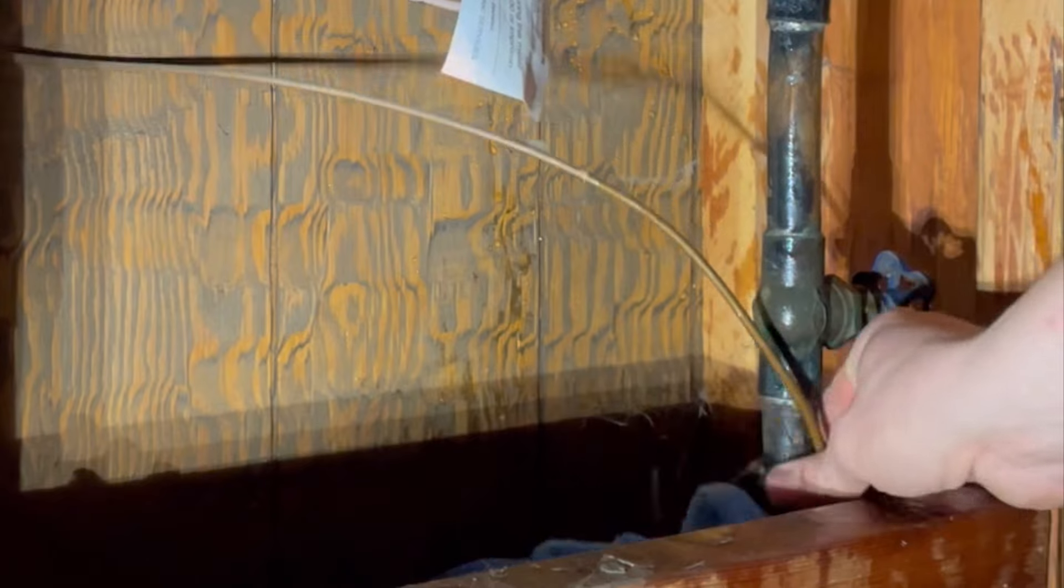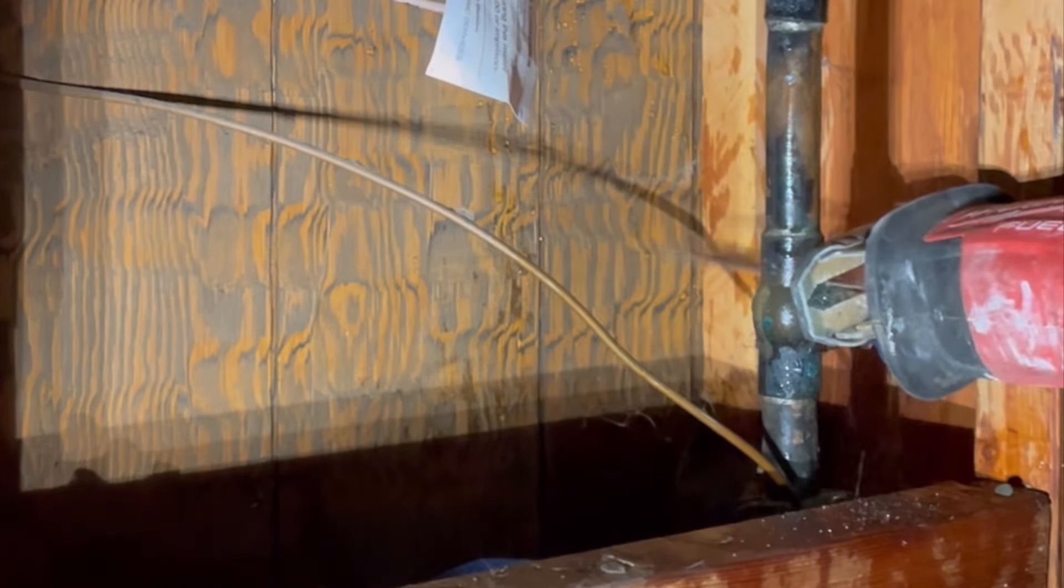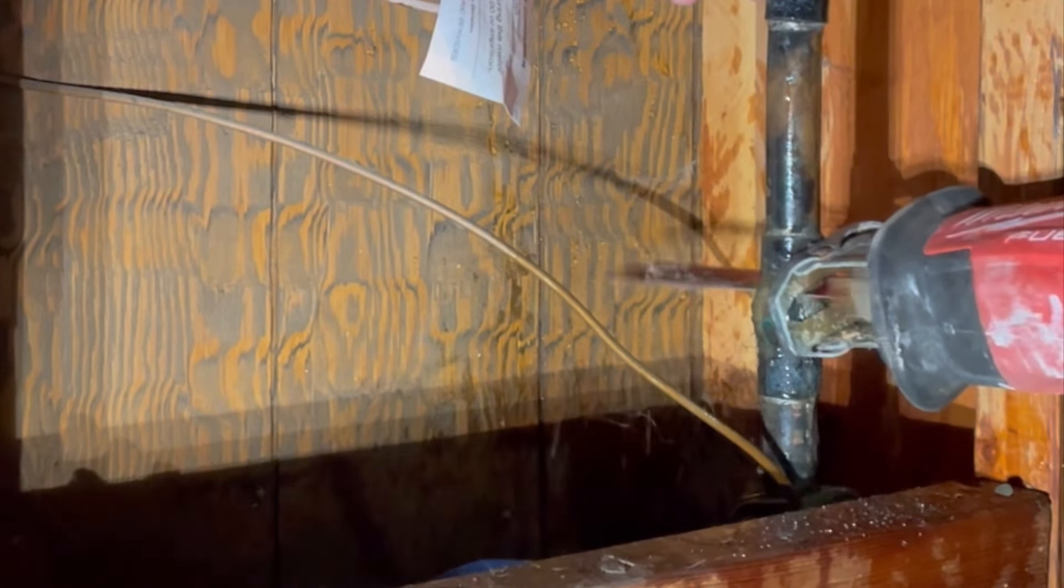On this house the water service came in K copper, which is a type of soft copper. It's one of the thickest walled copper pipes that you can get, very common in our area, and it's a very durable pipe just because of the thickness of it.